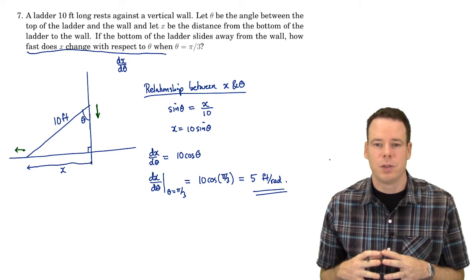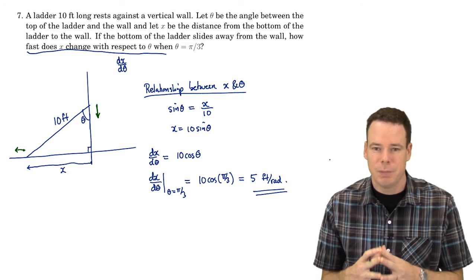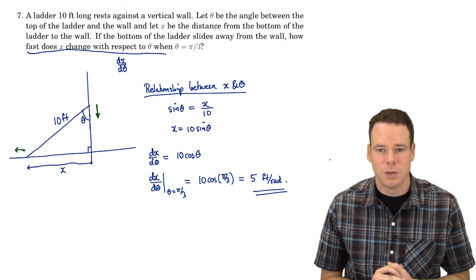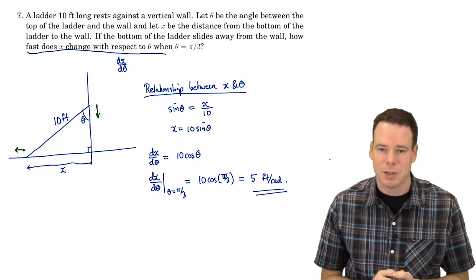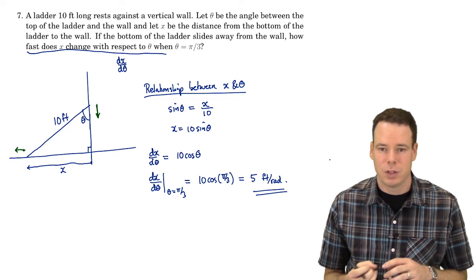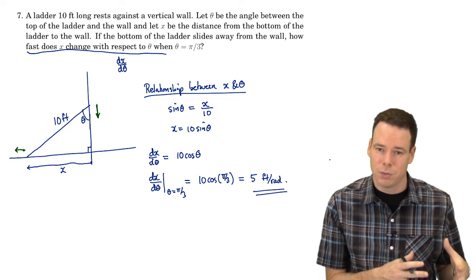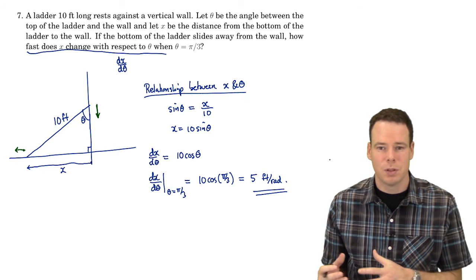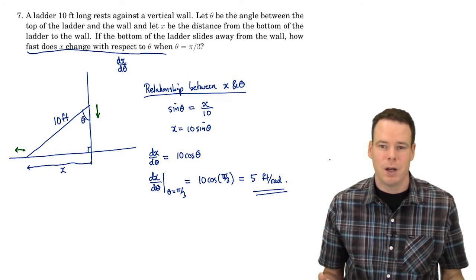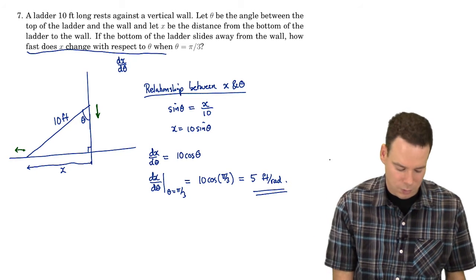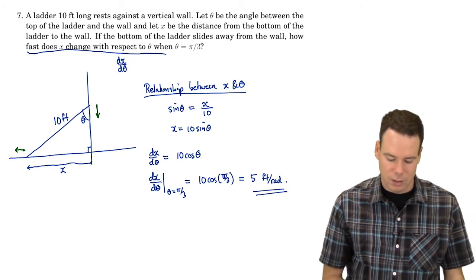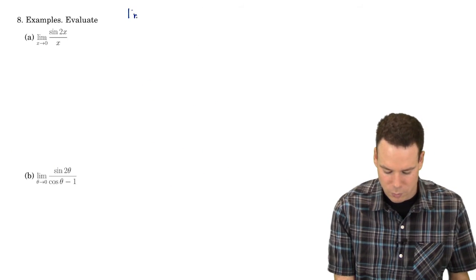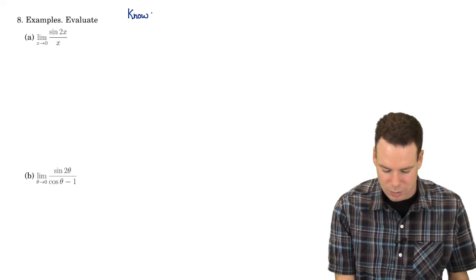Now I want to move on to limits involving trig functions, and this is where we're going to use those known limits that we just worked out, which helped us find the derivative of the sine function — those special limits that came up. We're going to use those to help us find limits of other functions involving sines and cosines. So let's just jot down what we know. These are these special limits.